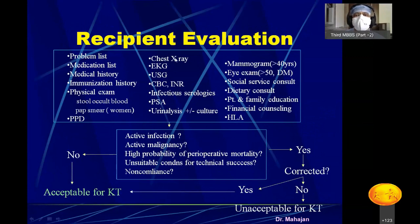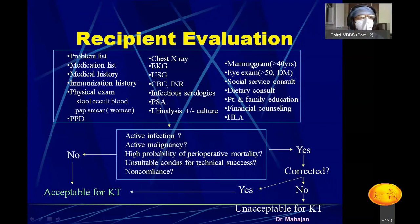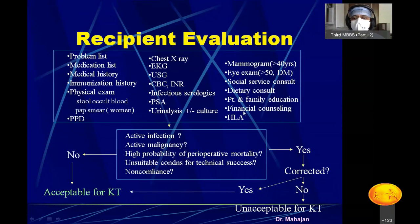The evaluation checklist for recipients includes: problem list and co-morbid conditions, medications and detailed medical history, past immunizations, physical examination, chest X-ray, ECG, ultrasonography, screening for infectious diseases, PSA in elderly male patients to rule out malignancy, urine analysis, mammography in females over 40 to rule out breast cancer, eye examination, social service consultation for surgery cost, dietary consultation, family education, financial counseling, and HLA typing.